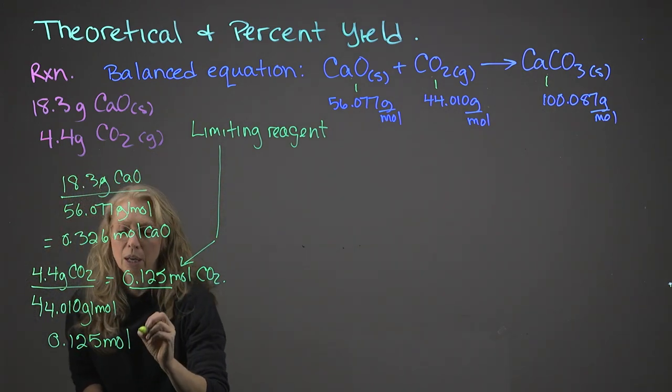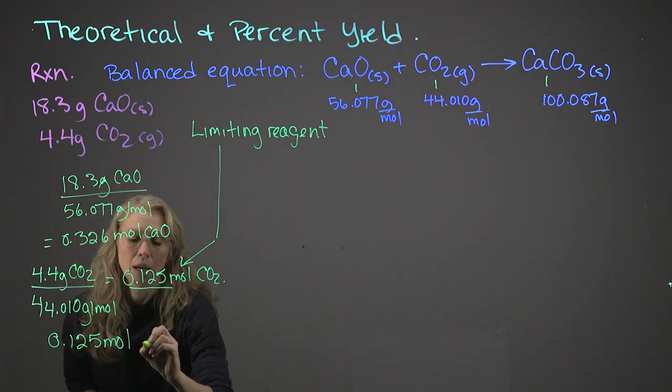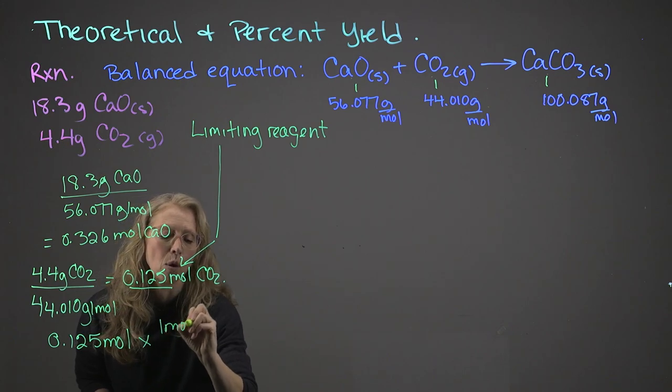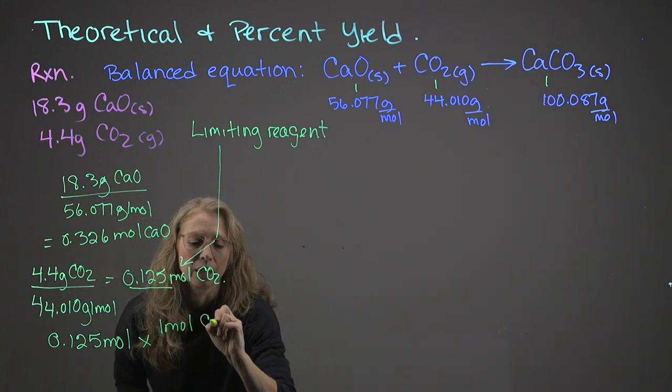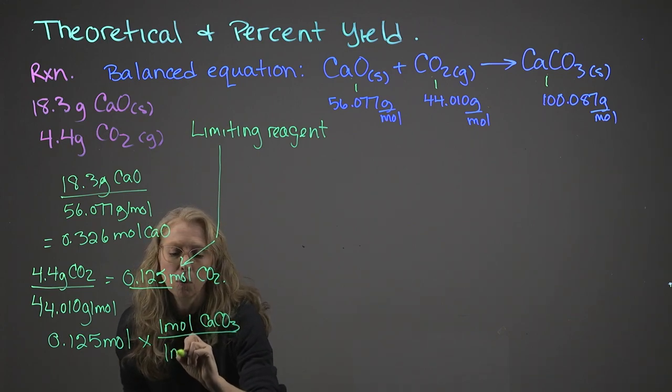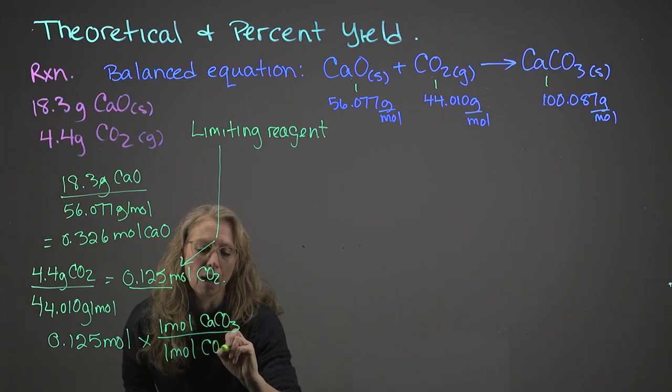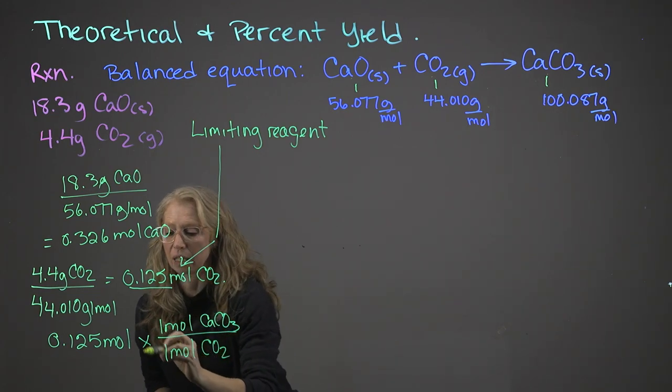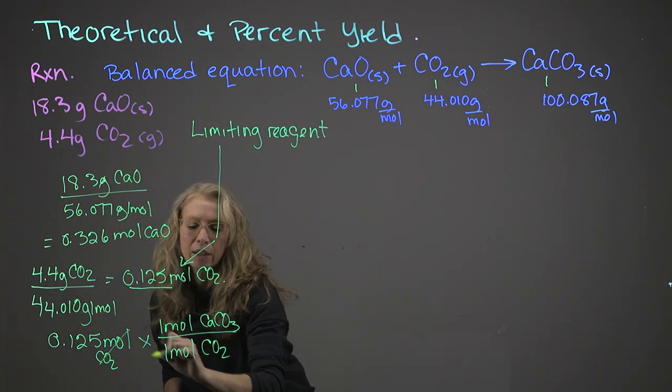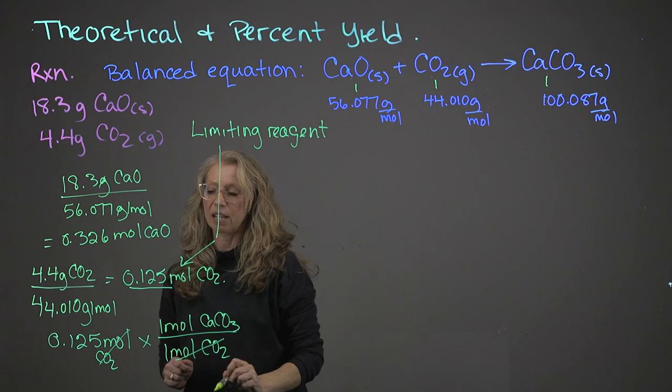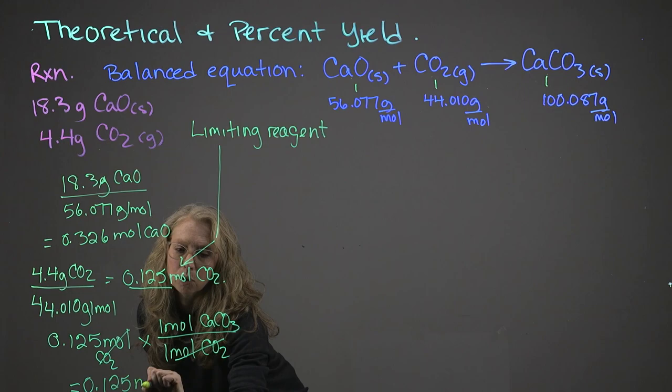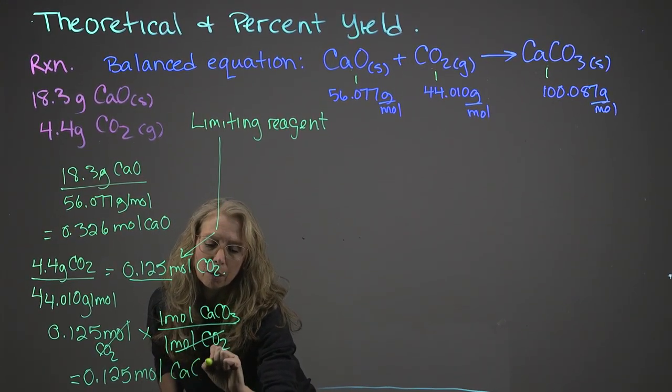We take that value and we show the relationship of it. So, for every 1 mole of calcium carbonate, we want that to be on top, and 1 mole of our carbon dioxide. We show that that cancels out, and that will give us a value of 0.125 moles of calcium carbonate.